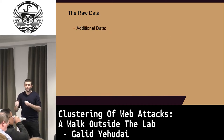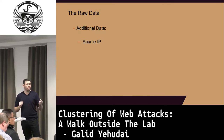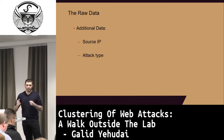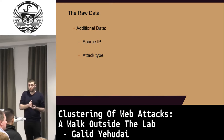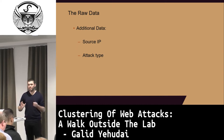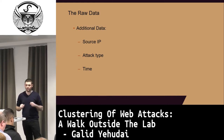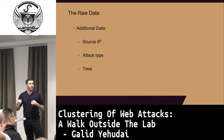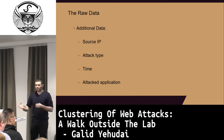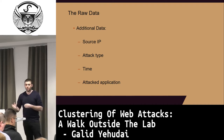Besides the HTTP request, we have additional data that may help. One important attribute is the source IP — it may indicate the origin of the attack, who the attacker was. Another is the attack type: the WAF tells us whether it was SQL injection, directory traversal, or cross-site scripting, which helps correlate attacks. We also know the time of the attack, which may help correlate attacks using timelines. And sometimes we have information about the attacked application itself — whether it's an online store or a banking application.